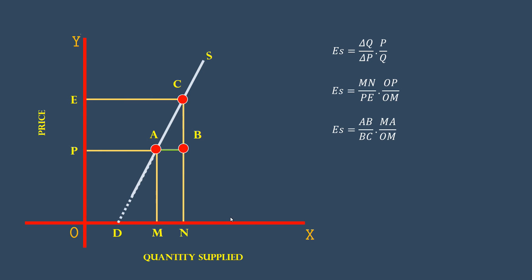Extend the lower segment of the supply curve, so that it cuts X-axis at point D. Triangle ABC and DMA are similar. Hence, let me replace AB with DM. BC with MA.